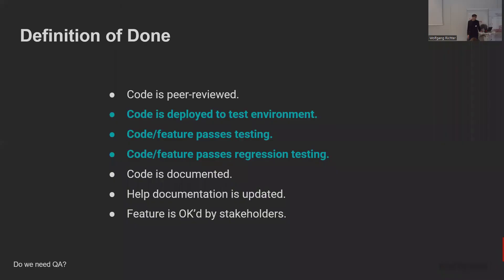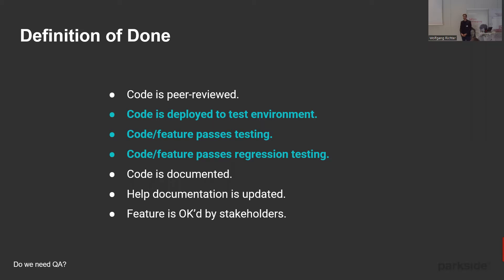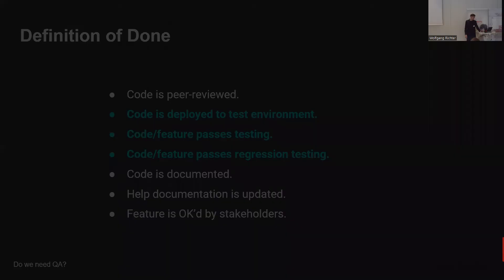Should quality assurance be part of the software development process? To answer that, let's think about the definition of done of a user story or feature. Would you expect that a story presented during sprint review is already completely finished? You definitely do not expect that the next sprint's capacity is needed for re-implementation of something tested right after review. That's why testing activities should be part of the definition of done. If a feature or user story is not tested yet, it should not be ready for review.